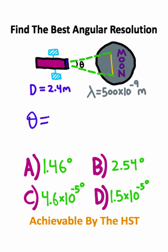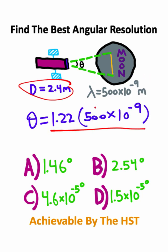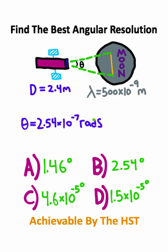So you have that our angle theta is equal to 1.22 multiplied by the wavelength divided by the diameter, which is 2.4 meters. You should get a value of 2.54 times 10 to the negative 7 radians.